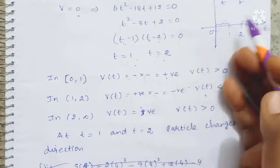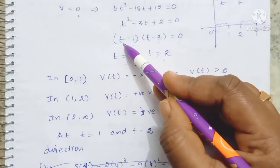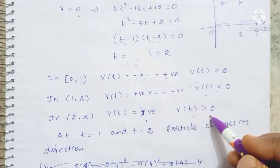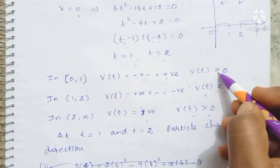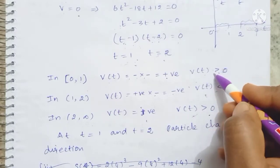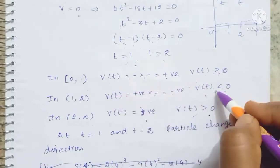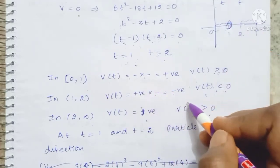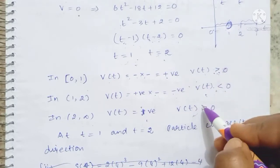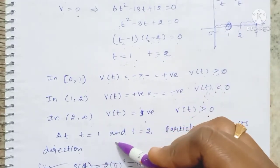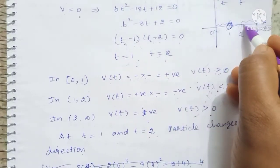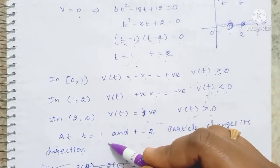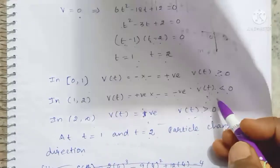For 2 to infinity, both (t minus 1) and (t minus 2) are positive, so positive times positive is positive — velocity is increasing, greater than 0. Since the velocity goes from positive to negative at t equals 1, and from negative to positive at t equals 2, these are the direction changes. So at t equals 1 and t equals 2, the particle changes its direction.